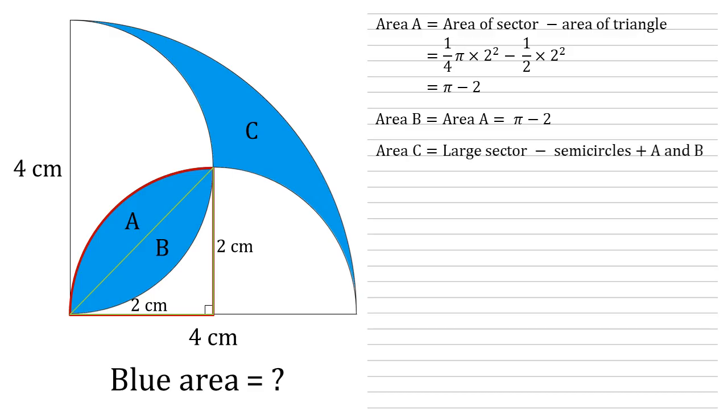So to get the area of C, we need to take our original sector, the four by four bit. We need to take away both semicircles. But then we need to add in one lot of A and B to take into account that fact that these circles overlap. We don't want to take it away twice. Now let's work out these bits separately.